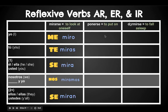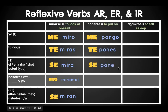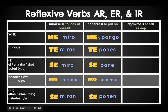Let's look at some other ones. This is an ER verb and this is an IR verb. We have: yo me pongo, tú te pones, él or ella se pone, nosotros nos ponemos, ellos se ponen. So this would be 'I put on myself a jacket or a sweater,' 'you put on a shirt.'